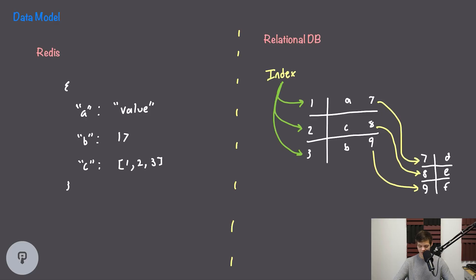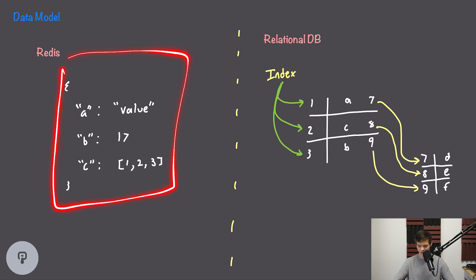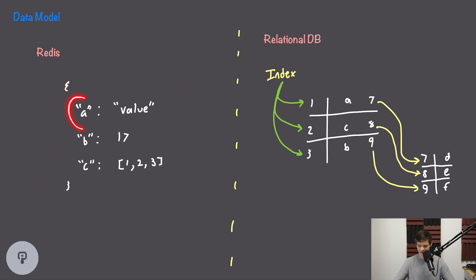To put this into perspective, let's first look at some differences between Redis and a typical database. With Redis, this is a key-value data store, so we have something like a dictionary structure in memory where we have keys and values associated with them. The values in Redis can have various data types.